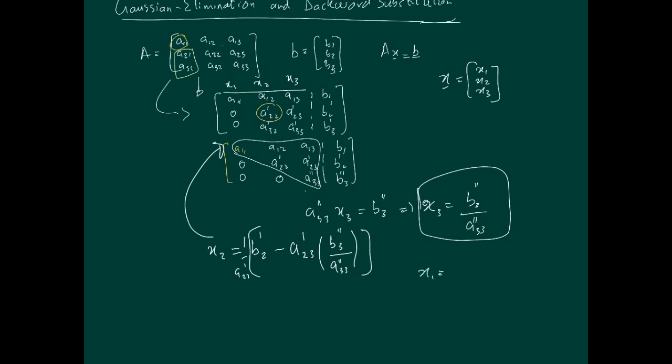So this tells us x1 is 1 over a11 times, a12 x2 negative, minus a13 x3 plus b1 here, and brackets.